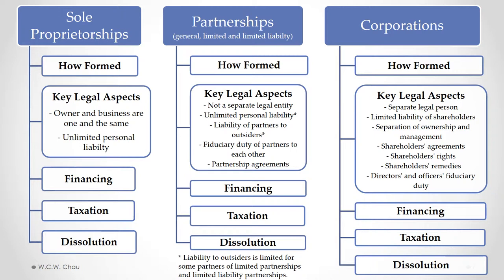Here is a map of the different forms of business organization we will be covering. For each of them, we will look at how it is formed, the key legal aspects, the financing of the business organization, the tax treatment, and how it is dissolved. The first type we will be covering is sole proprietorships.